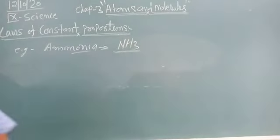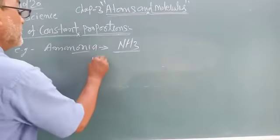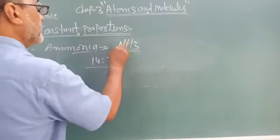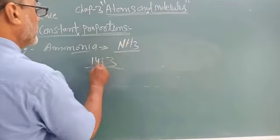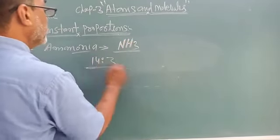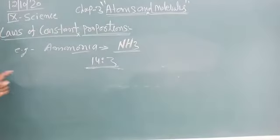Any compound has a fixed mass proportion. In ammonia, the mass proportion is 14:3. Nitrogen's atomic mass is 14, and hydrogen is 1 times 3, so 14:3 is the atomic mass proportion in ammonia.